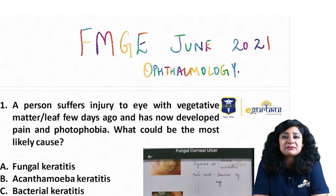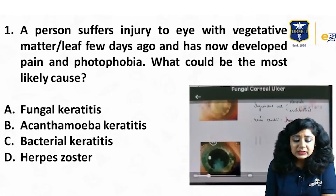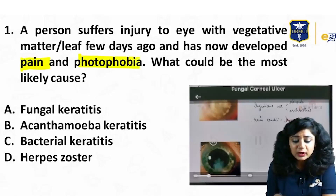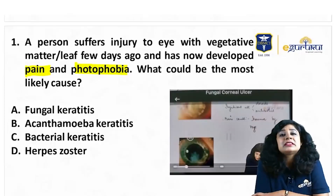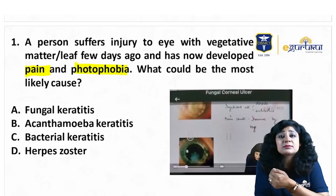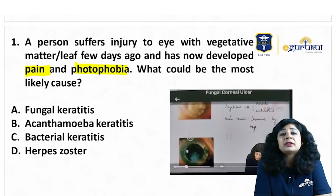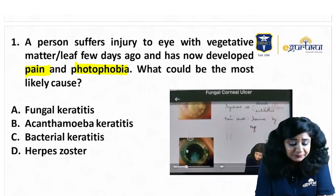Let's get started. Question number one: a person is suffering from an injury to the eye with vegetative matter or a leaf a few days ago, and has now developed pain and photophobia. What is the most likely cause? One disclaimer: all these questions are based on recall memory, so there could be slight changes in the framework or answer choices. The goal is to give an idea of high-yield topics for those preparing for the next FMGE examination.